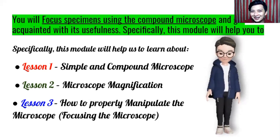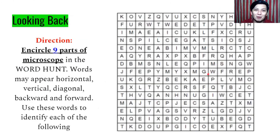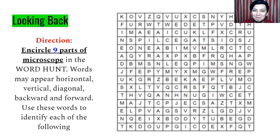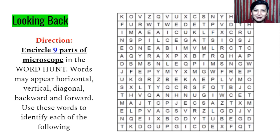Are you ready to listen? Let's proceed. Based on our review from last time, you will encounter nine parts of the microscope in our crossword puzzle. You need to identify and encircle all nine parts. Words may appear horizontal, vertical, diagonal, backward, and forward. Use these words to identify each of the following. We have nine questions and I will give you the answers in the word puzzle.